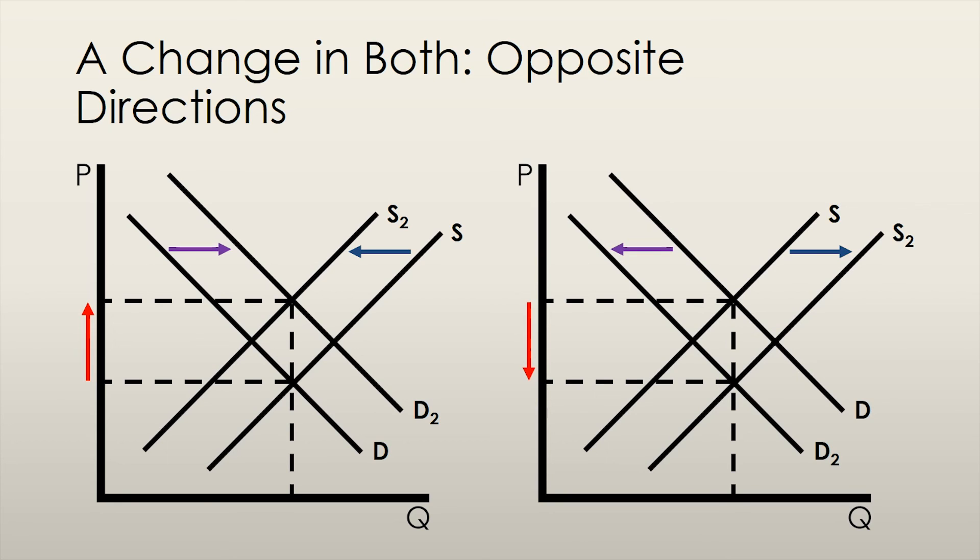On the other hand, if demand decreases and supply increases, we would be able to infer that the equilibrium price would decrease. However, again, we would need more information on how much the demand and supply curves have shifted in order to determine the overall effect on the equilibrium quantity.